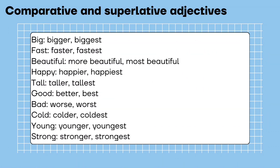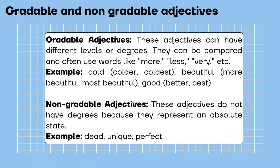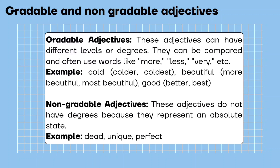Here are ten adjectives with comparative and superlative degrees. Gradable and non-gradable adjectives. Gradable adjectives: these adjectives can have different levels or degrees. They can be compared and often use words like more, less, very, etc. Example: cold, colder, coldest; beautiful, more beautiful, most beautiful; good, better, best.